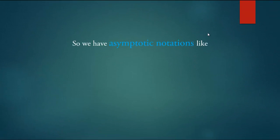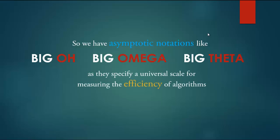So we have asymptotic notations like big O, big omega and big theta as they specify a universal scale for measuring algorithms. And that my dear friends is amazing.